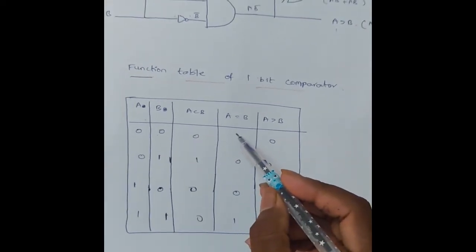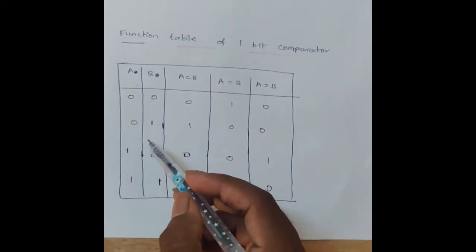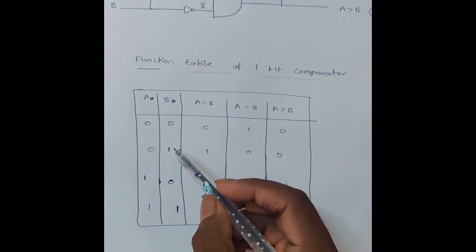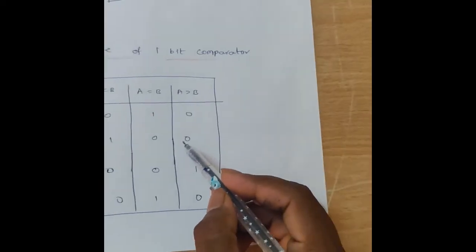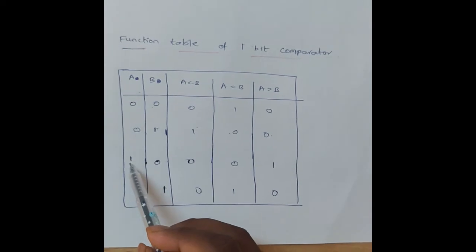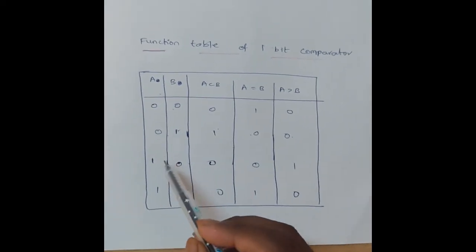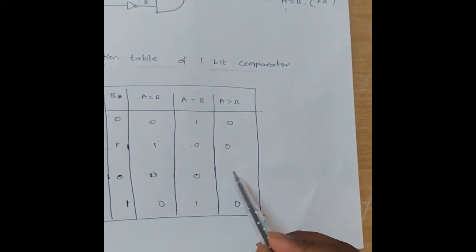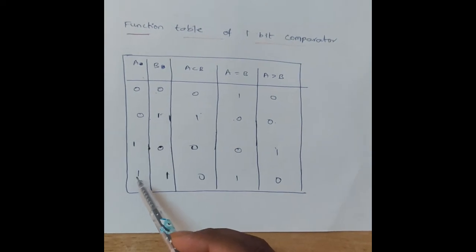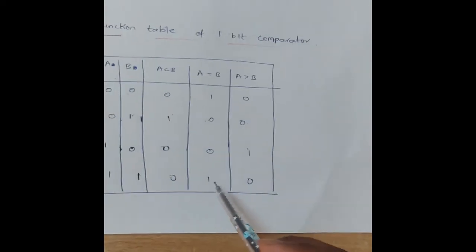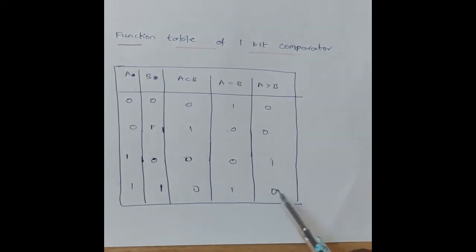For input 00, A equals B, so the A equal to B output is one and the remaining outputs are zero. For input 01, the magnitude of B is greater than A, so A less than B is one and the remaining are zero. For input 10, A is greater than B, so A greater than B is one and the remaining are zero. For input 11, the magnitudes are equal, so A equal to B is one and the remaining are zero.